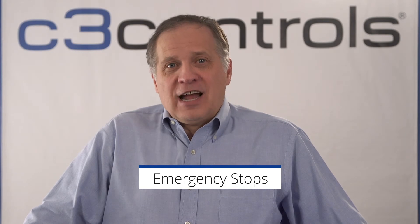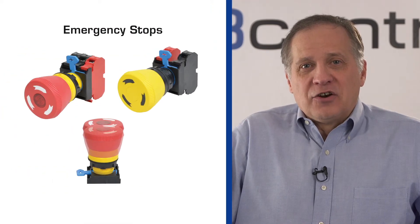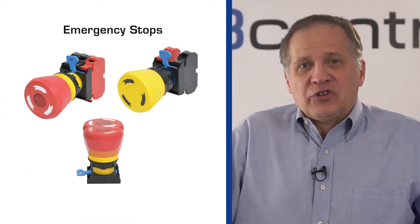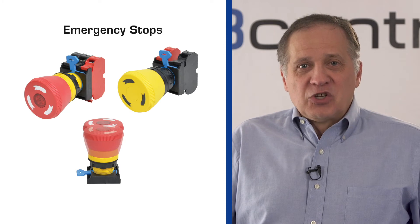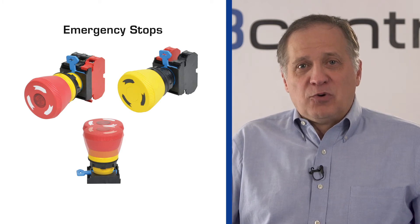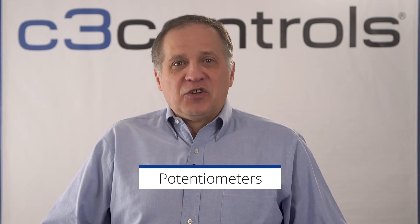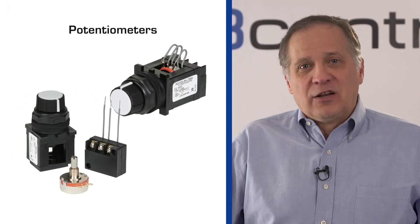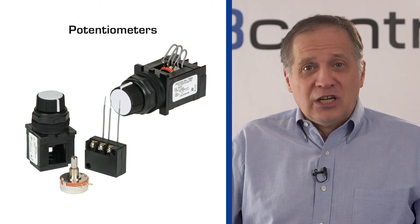Emergency stops, or emergency stop push buttons, are designed to improve the safety of equipment and workers. They are required by installation codes and standards and are used to disable a machine or system in the event of an emergency. These devices are usually provided with push-pull or push-twist and release functions. Finally, potentiometers feature three terminal resistors with rotating or sliding contacts which adjust the voltage sent to the machine.